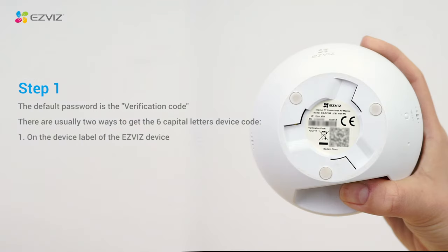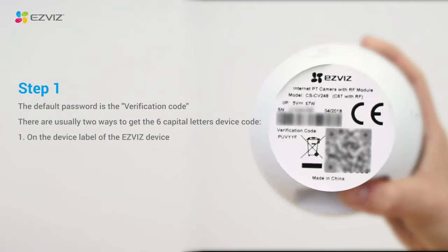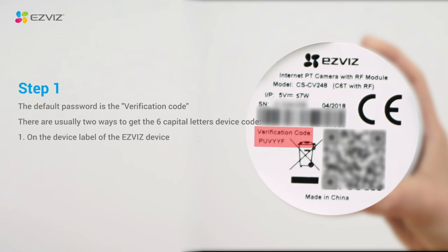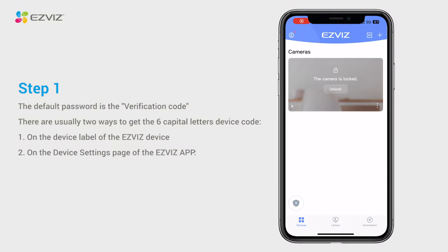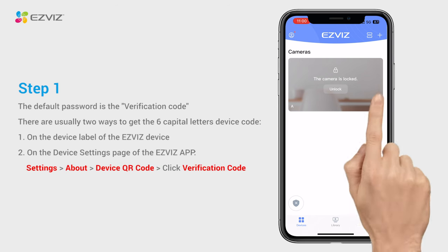You can find it on the device label of the EZViz camera. Alternatively, if you have set up the device via the same mobile terminal, you can also find it in camera settings.